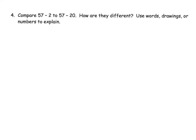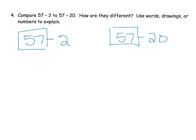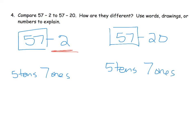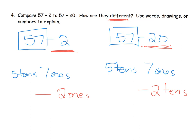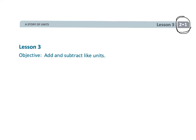The last slide says compare fifty-seven minus two to fifty-seven minus twenty. In both cases the front number is fifty-seven — five tens and seven ones. But in the left example we're taking away two ones, while in the right example we're taking away two tens. So the result on the left is fifty-five, and the result on the right is thirty-seven. That wraps up Grade 2, Module 1, Lesson 3.